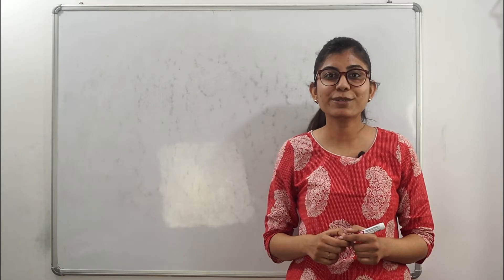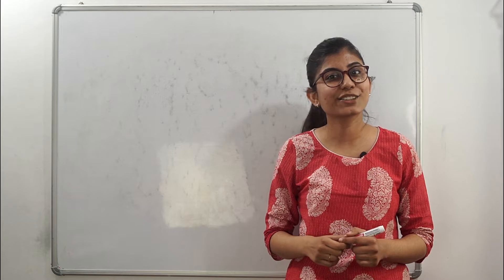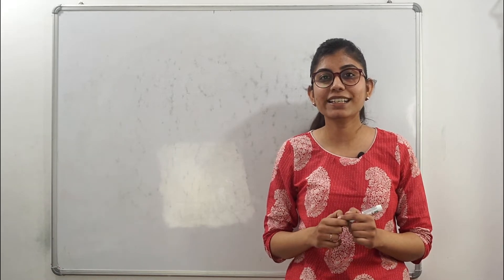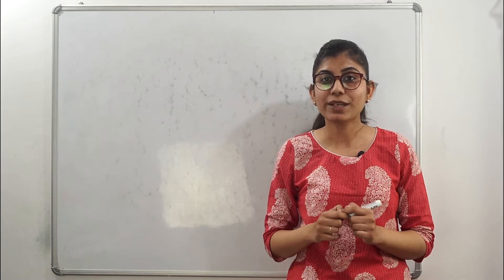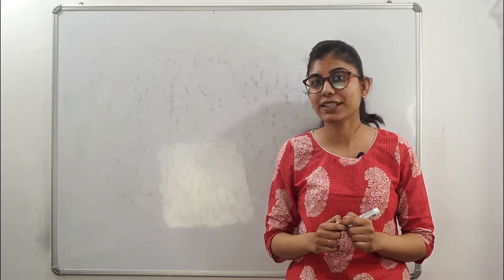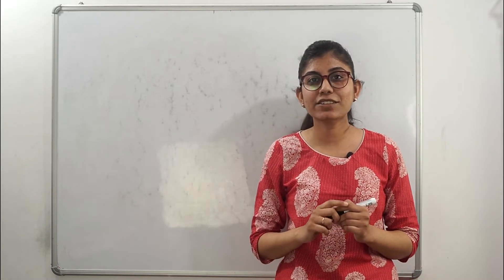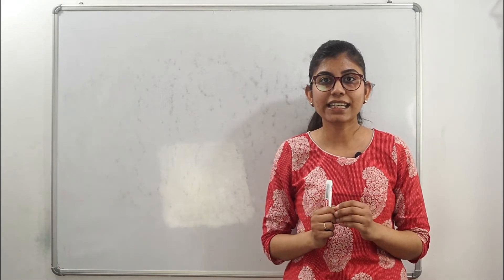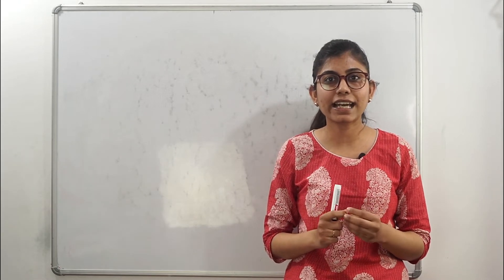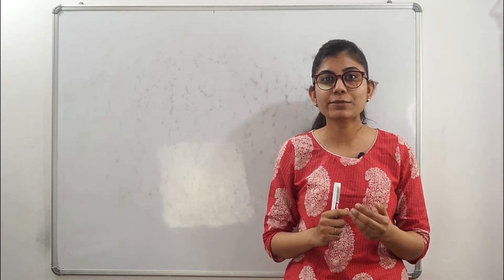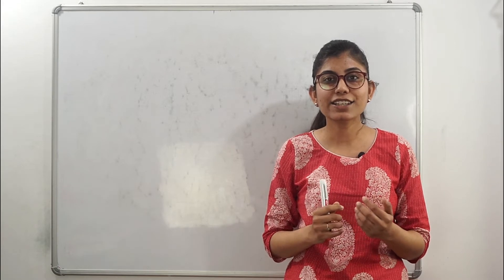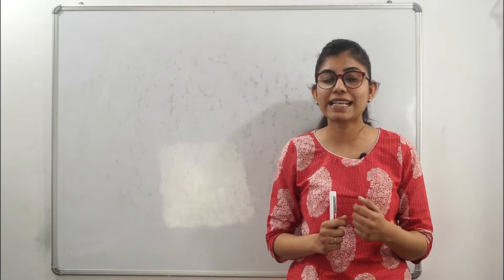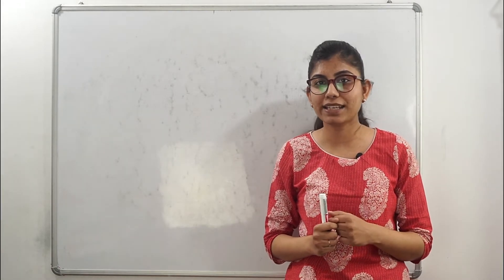Hello everyone, welcome to Android's Minds YouTube channel. I am Preq Shah, here with a very interesting multiplication trick. What is interesting about this trick? With one trick, you can see how 99, 9, or 999 — 4×9, 5×9, all these numbers — can be easily multiplied with any number.